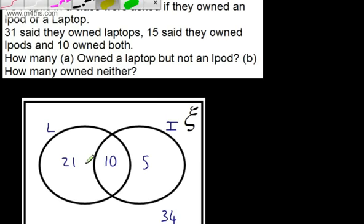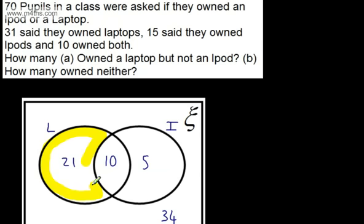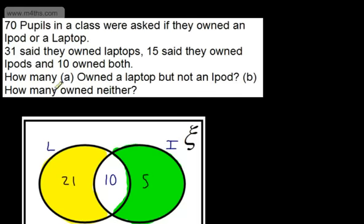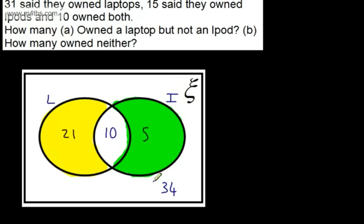The part on the left is people who owned laptops only — a laptop and no iPod. The middle, L intersection I, is 10 — people who owned both an iPod and a laptop. The right side is people who owned an iPod only. So if you were asked the probability that someone chosen at random owned an iPod only, that's 5 out of 70. This whole count must be equal to 70.